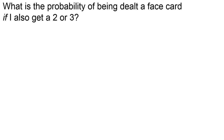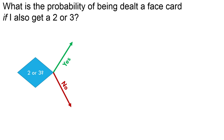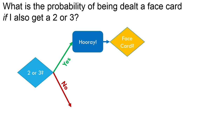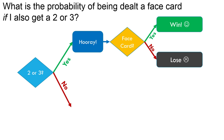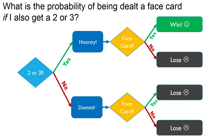Let's look at a simple situation — it's gambling related. What's the probability of being dealt a face card if I also get a 2 or 3? First we have to consider the condition: did I get a 2 or 3? That can be yes or no. I'm lumping 2 and 3 together — '2 or 3' is one thing, 'not 2 and not 3' is another. Then there's another event: if I got a 2 or 3, did I get a face card? Yes or no. If I got a 2 or 3 and a face card, I win. If I don't get a 2 or 3, I lose no matter what the way I've set this situation up.